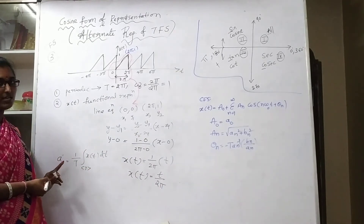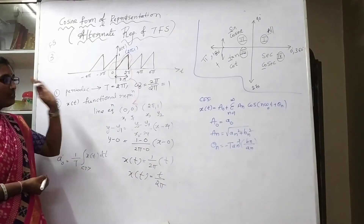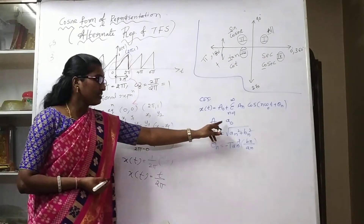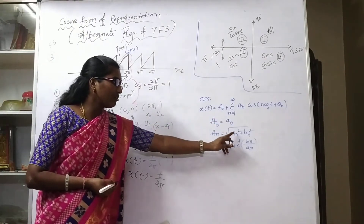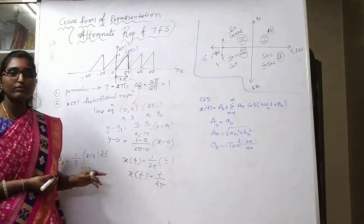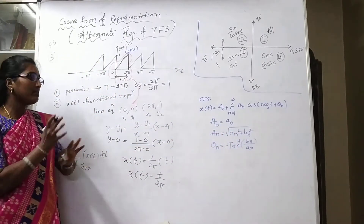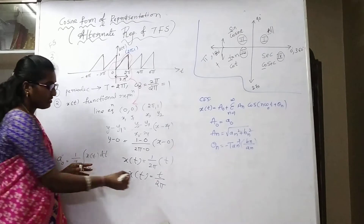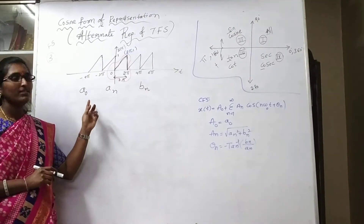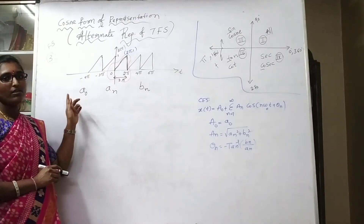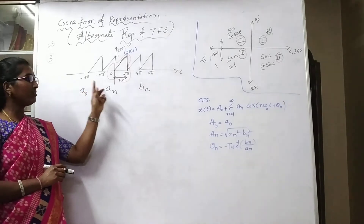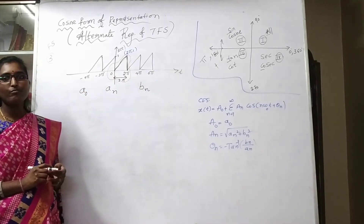Next we need to find A₀, Aₙ, and Bₙ. In the cosine Fourier series, we still depend on A₀, Aₙ, and Bₙ — we follow the trigonometric Fourier series with simple modification. We need to evaluate all three parameters.